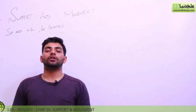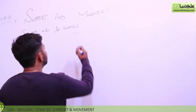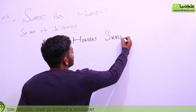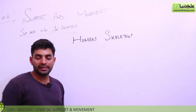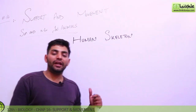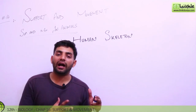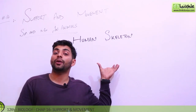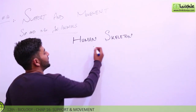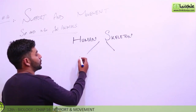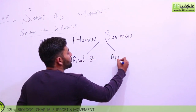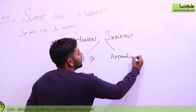Hello, ladies and gentlemen. Today our topic is Human Skeleton. This human skeleton is basically divided into two categories: first of all, we have an axial skeleton, and the second one is appendicular skeleton.